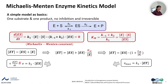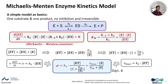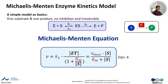The change in product concentration over time equals K2 multiplied by ES. If all of the total enzyme in the reaction system is in the form of the ES complex, we reach the maximum reaction rate, Vmax. Combining these, we obtain the Michaelis-Menten equation: V equals Vmax multiplied by substrate concentration, divided by Km plus S. This is the Michaelis-Menten equation.